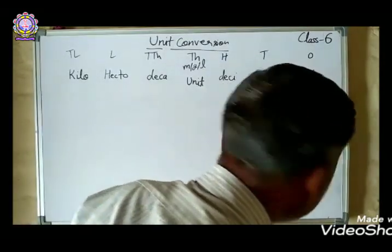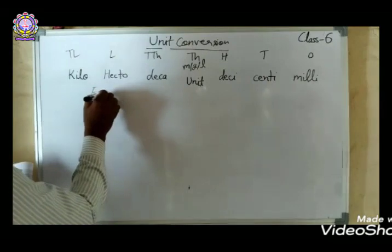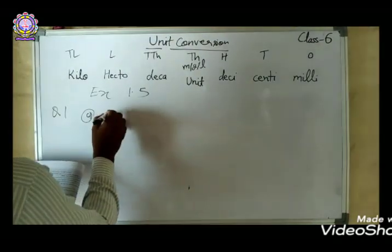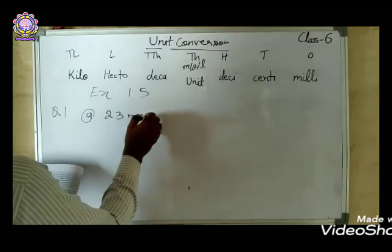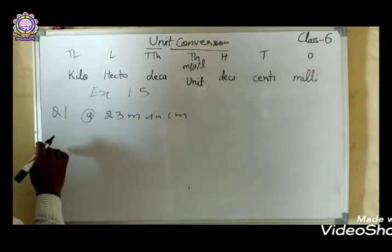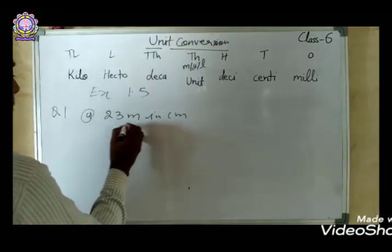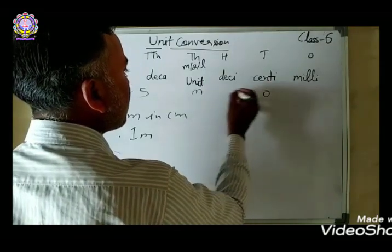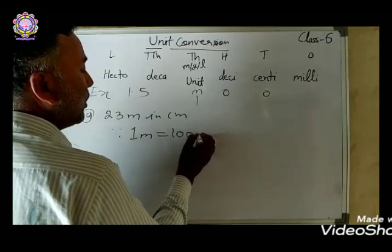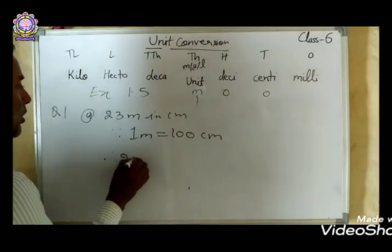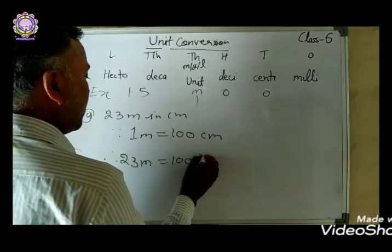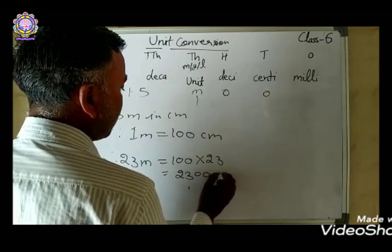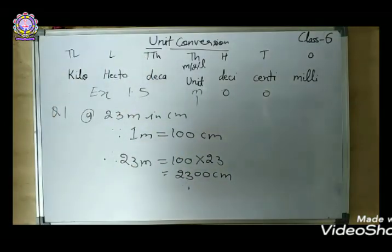Let us solve question number one from Exercise 1.5, part A. Convert 23 meters into centimeters. One meter equals 100 centimeters. Therefore, 23 meters is equal to 100 into 23, which gives 2,300 centimeters. That is the answer.